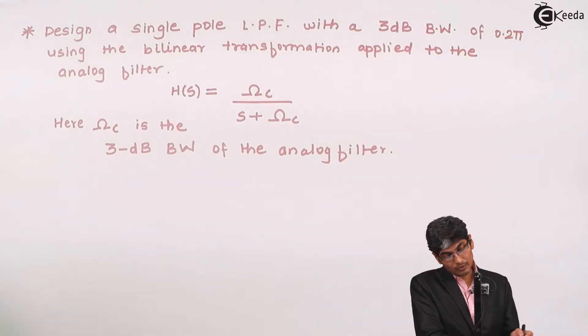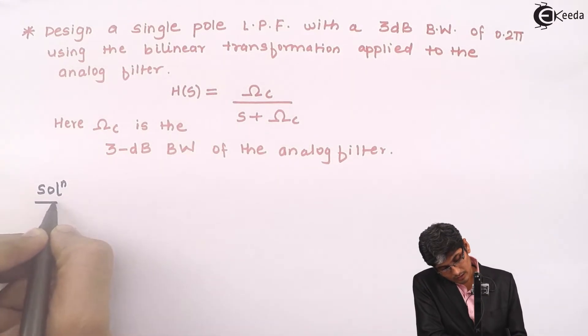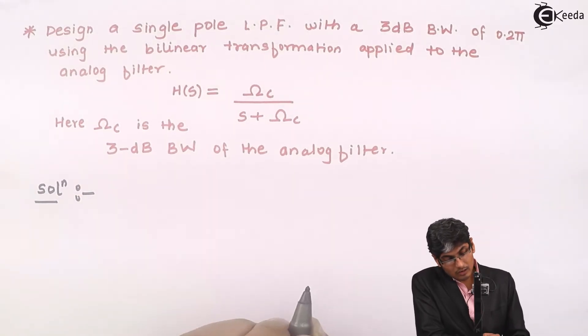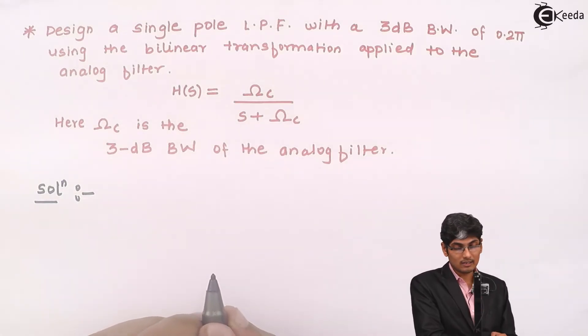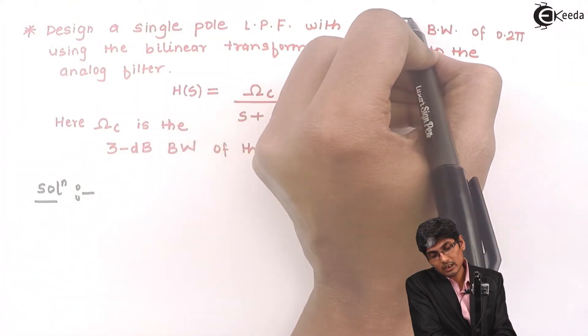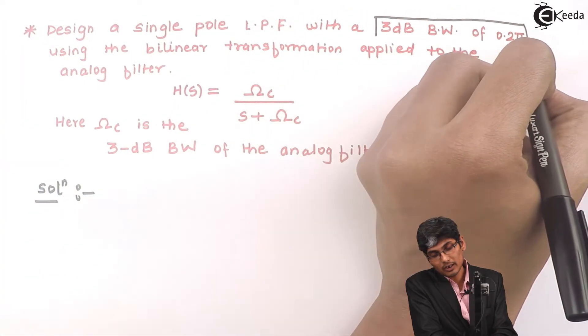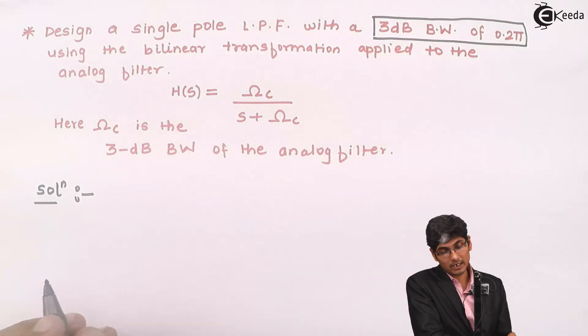To proceed with this problem, let us go to the solution. First, I need to know what is this Ωc. They say that Ωc is the cutoff frequency. As mentioned in the problem, the 3dB bandwidth is 0.2π of a digital filter, which means the cutoff frequency of the digital filter is 0.2π.